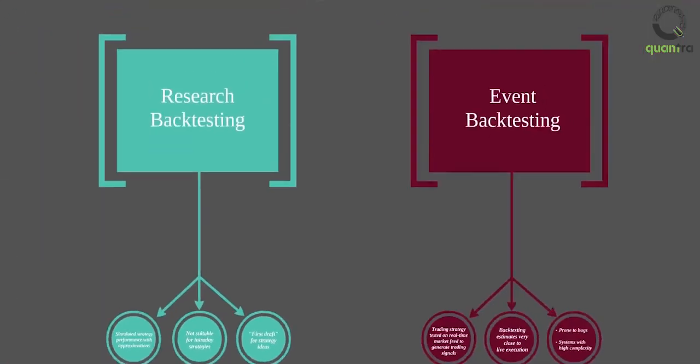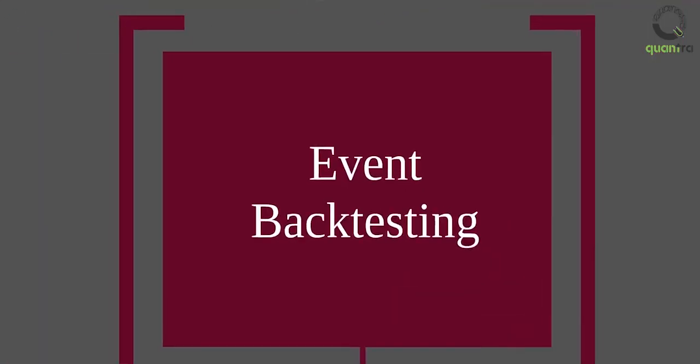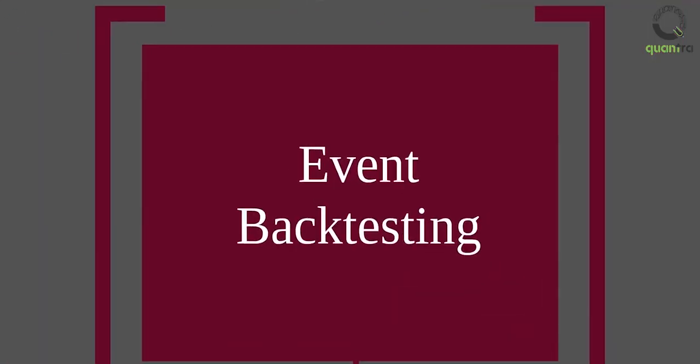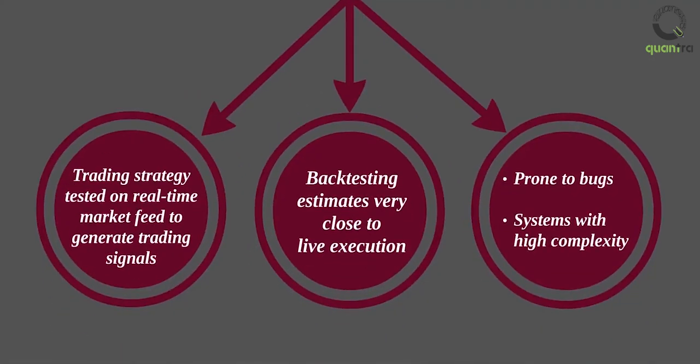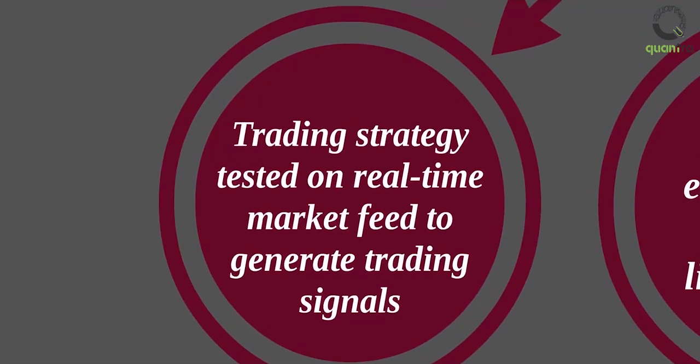The next is event-driven backtesting. In this backtesting, the automated trading strategy is connected to a real-time market feed and a test broker or simulator. Then the system receives new market information which is sent to a system that helps generate a new trading signal.